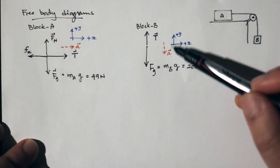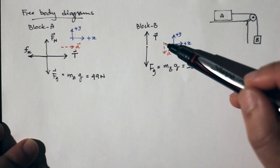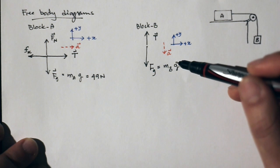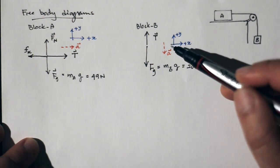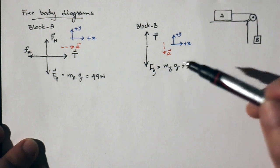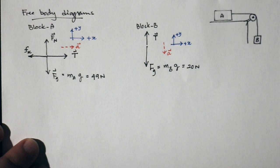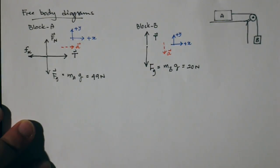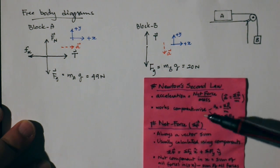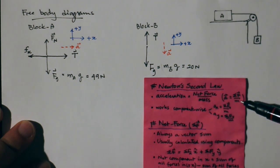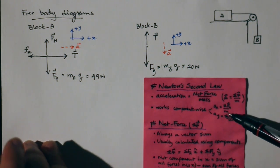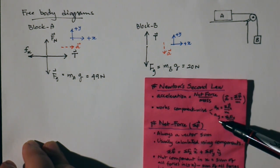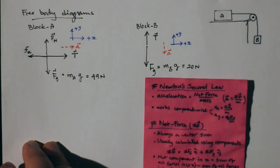I chose the acceleration of B to be downward, but it could have been upward. If the value comes out negative, that just means the actual direction is opposite to my assumption. Now we're ready to apply Newton's second law, which states that acceleration equals net force divided by mass. Since this is a vector equation, it works component-wise: the x-component of acceleration equals the x-component of net force divided by mass, and similarly for the y-direction.